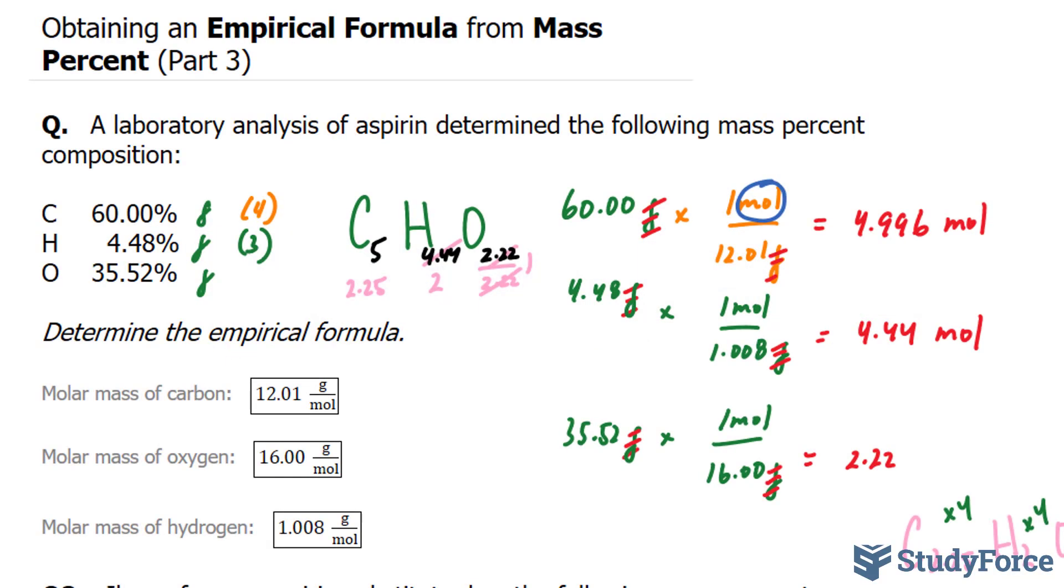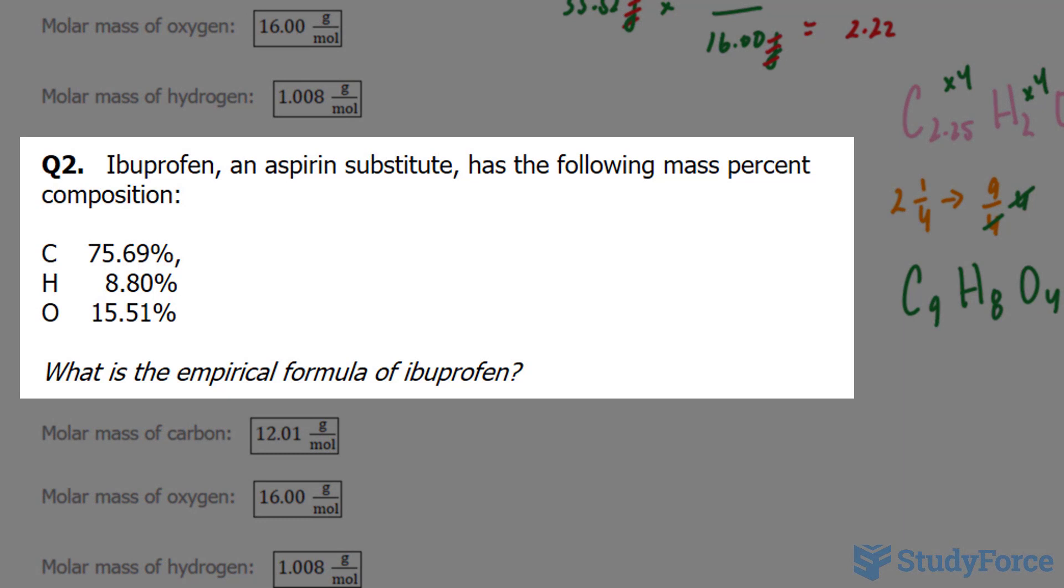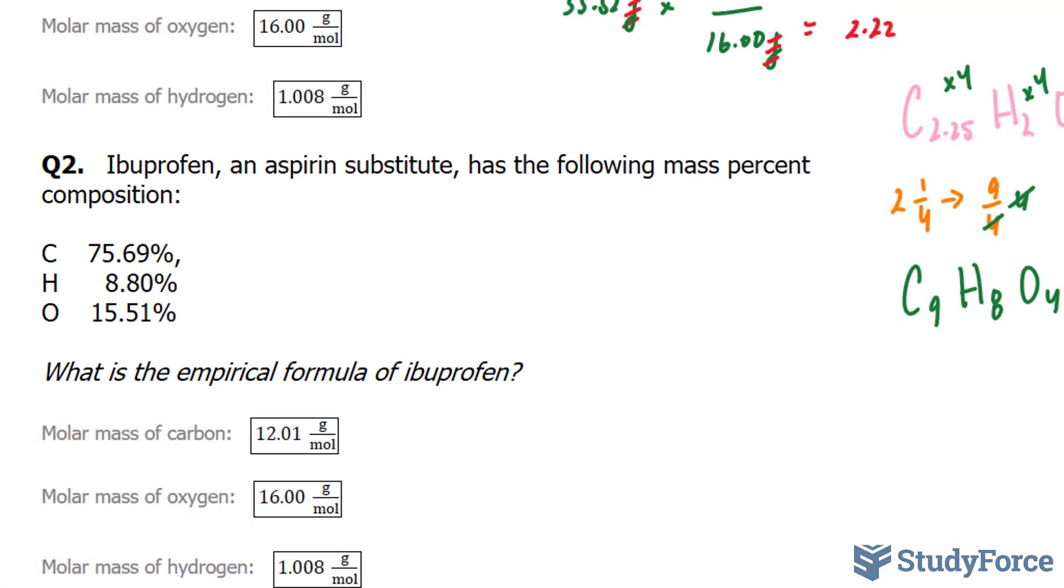In part 3 of this series, we'll continue answering where we left off, and just like in question 1 where we took mass percent and used it to find the empirical formula, we'll be doing the exact same thing in question 2. The question reads, ibuprofen, an aspirin substitute, has the following mass percent composition: 75.69% carbon, 8.80% hydrogen, and 15.51% oxygen. What is the empirical formula of ibuprofen?